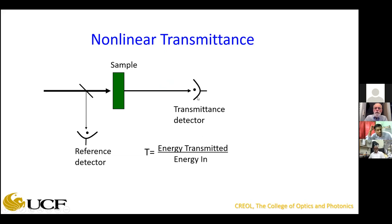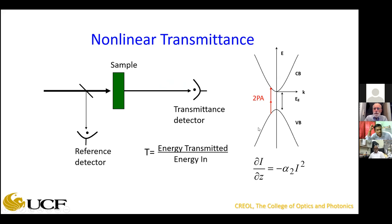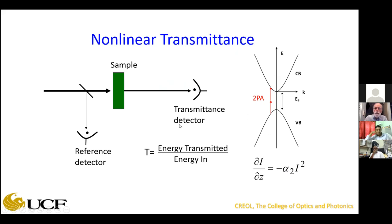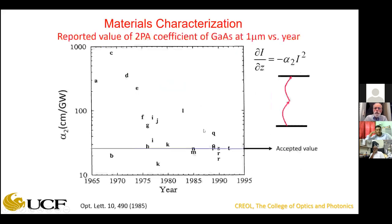I'm going to talk about semiconductors for a while, where instead of having one photon get you from the valence to the conduction band, you have two photons that are simultaneously absorbed. The dI/dz, rather than being minus alpha times I, is minus alpha_2 times I squared. Three-photon absorption goes as I cubed, et cetera. Really simple theory in that respect.